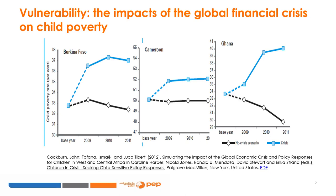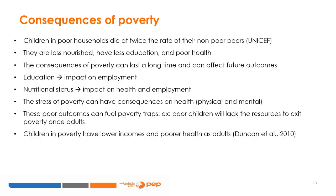We can expect the COVID-19 pandemic to have similar effects if strong policies to support these most vulnerable people are not put in place. Fourth, child poverty has long-lasting consequences, which have been long studied. Children in poor households are less healthy and less nourished, have less education, and they have higher mortality rates. Lower education and poor nutritional status impact future employment opportunities, which can lead to poverty traps. The stress of chronic poverty can have long-lasting physical and mental consequences.